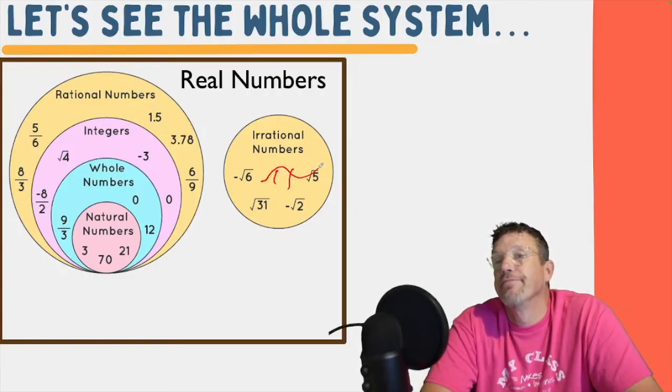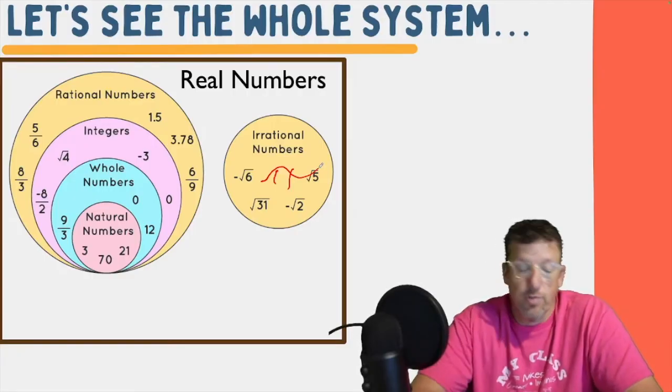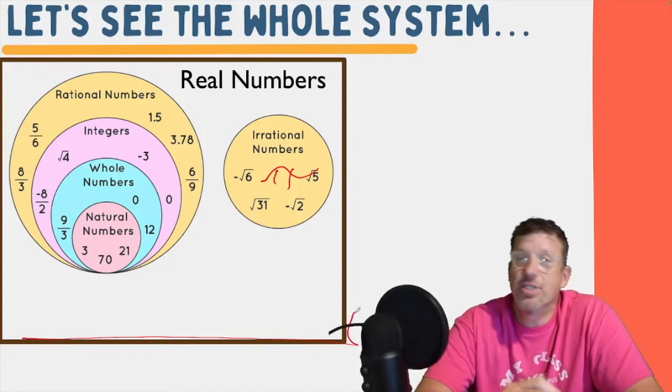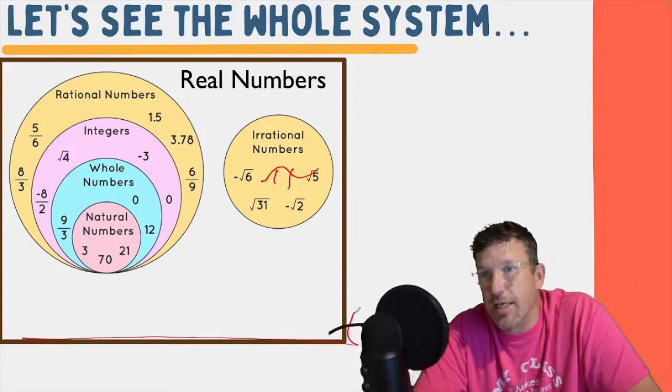See how that works? So the real number system is that big section of numbers all together, and these are all of its subsets.